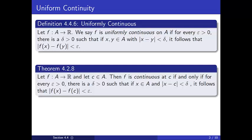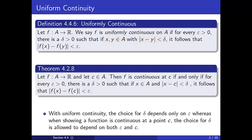Take a moment to compare the two statements. Notice that the only significant difference is that we have not specified a domain point c in the definition of uniformly continuous. In other words, the definition is considering continuity at all points of A simultaneously. We will see this in our proofs in the fact that our choice for delta depends only on epsilon when proving that a function is uniformly continuous on a set, whereas when showing a function was continuous at a point, delta was allowed to depend on both epsilon and the specified domain point c.